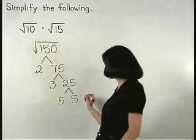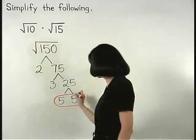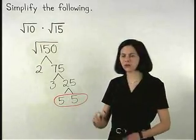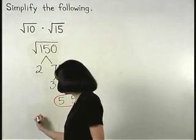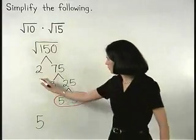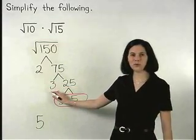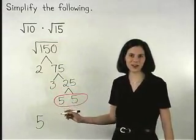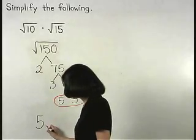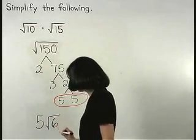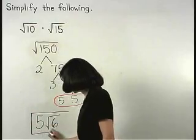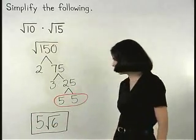So we have a pair of 5's which means that a 5 can come out of the radical and the 2 and the 3 that don't pair up stay inside the radical, multiplying together to make 6. So our final answer is 5 root 6.